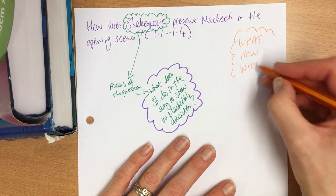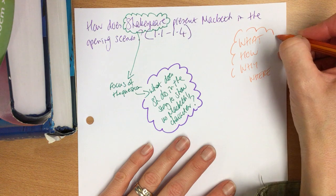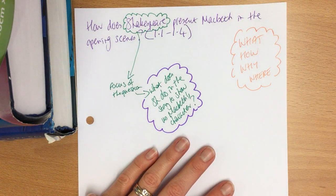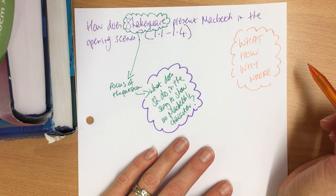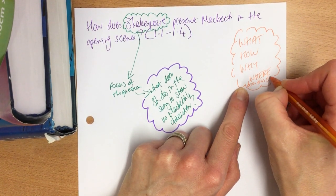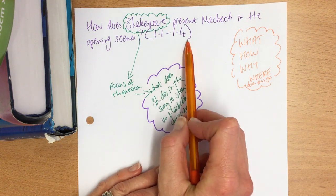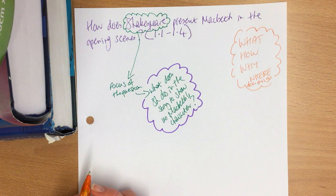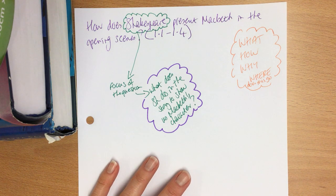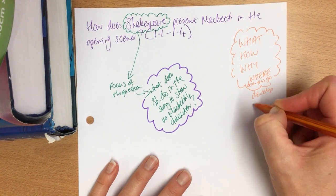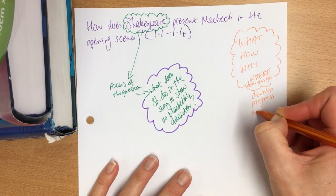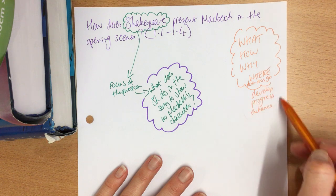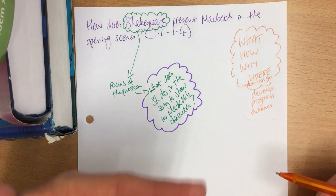I'm going to introduce 'where.' It's not simply that I want you to locate it in the play — I want you to talk about where does this go. Because we've got four scenes to play with, you could mention that his name is marked by the witches in the opening scene and we don't even meet him, but we hear of him for the very first time from the witches. Words like develop, progress, enhance — look them up in a thesaurus, see other words you might use, because it's the process. We're building up.